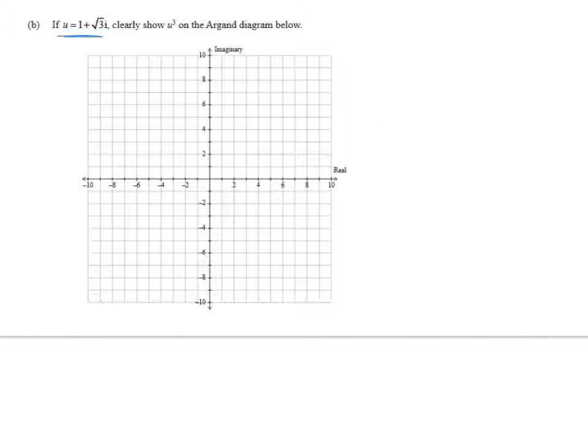Okay, we're given a complex number u. u is equal to 1 plus root 3i. And we're asked to clearly show u cubed on the Argand diagram below. So not u, but u cubed. Now, as soon as we start working with powers, the best way to do it is to work not in rectangular form, but in polar form.